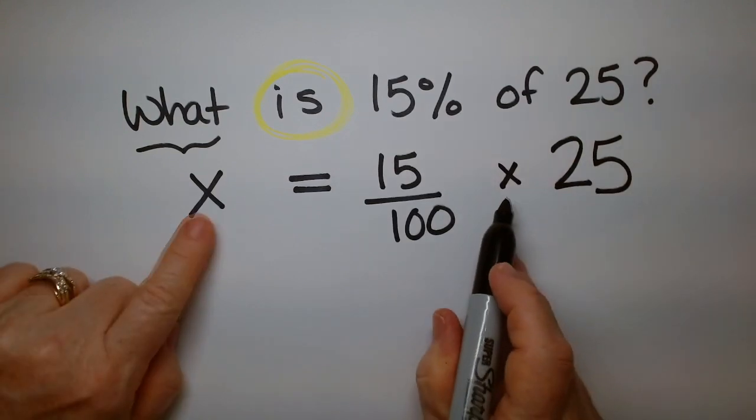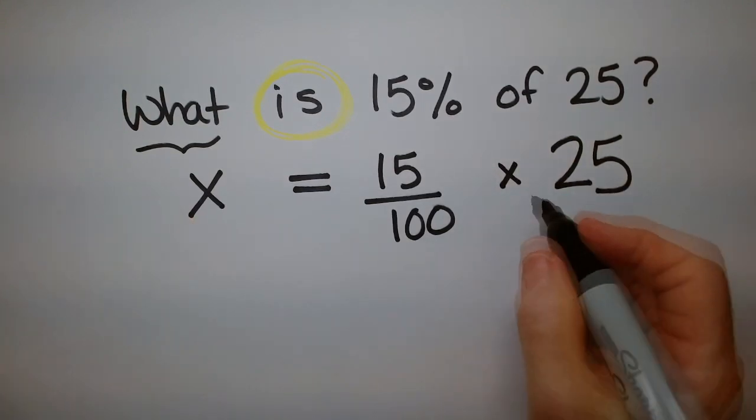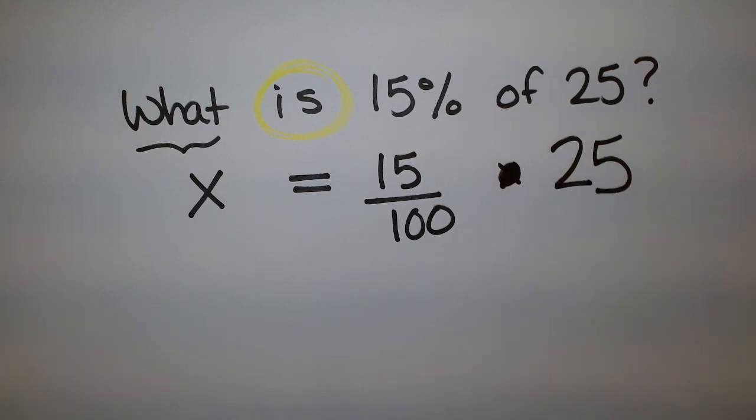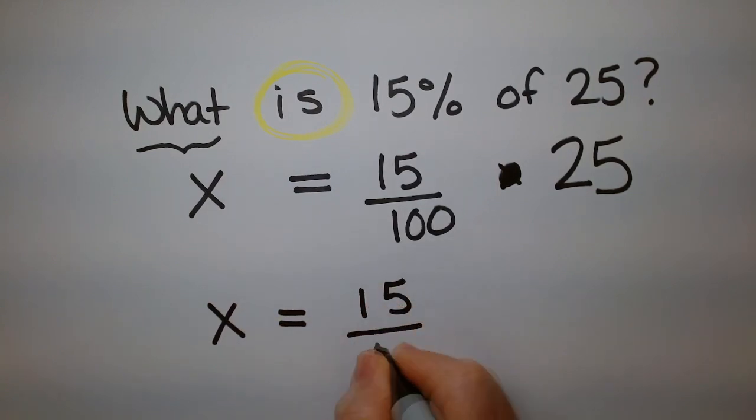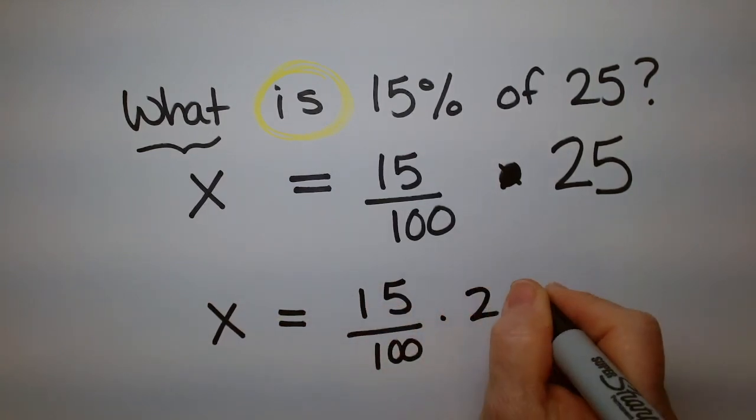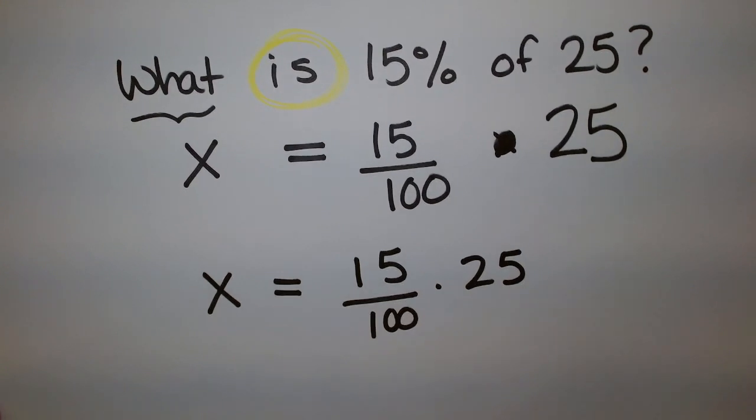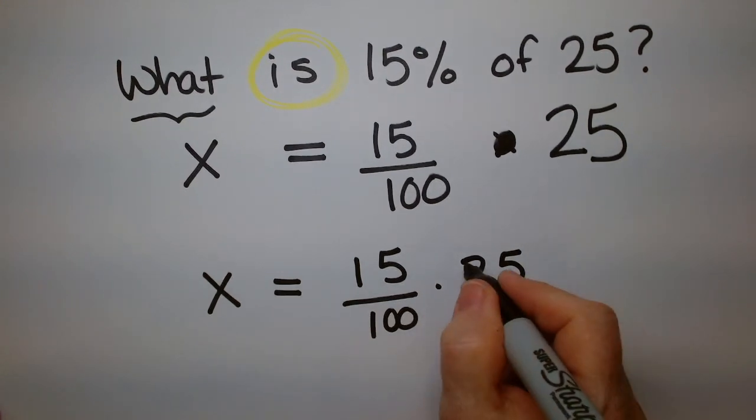Now we have a problem because these look the same, don't they? So what I would do in a problem like this is multiply is now going to be a dot. So I don't get them confused with the variable. So X is 15 over 100 times 25. And then all I have to do is multiply these out. I'm actually going to simplify first.